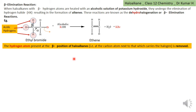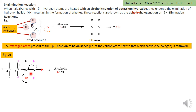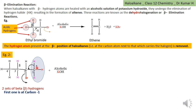Let us take another example. Consider 2-bromobutane: carbons 1, 2, 3, 4. Bromine is present on the second carbon, so the second carbon is alpha. There are two beta positions: the first carbon is beta (next to alpha), and also the third carbon on the other side is also beta. So there are two sets of beta hydrogens — those at carbon 1 and those at carbon 3. Either of these beta hydrogens can be eliminated, leading to dehydrohalogenation.